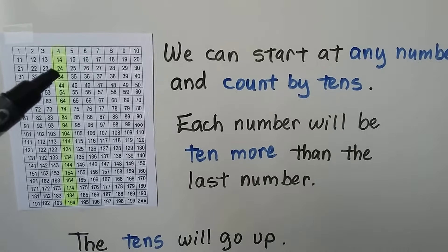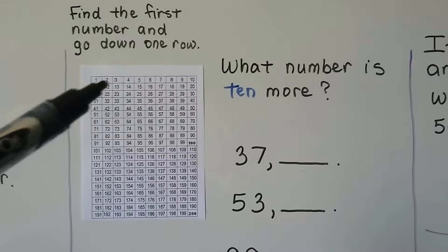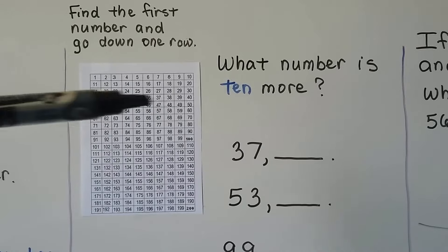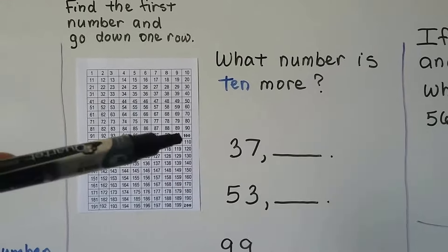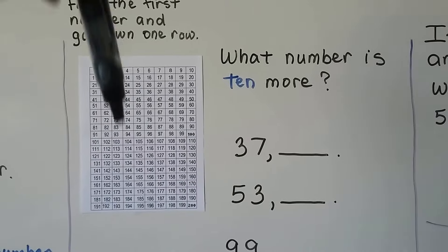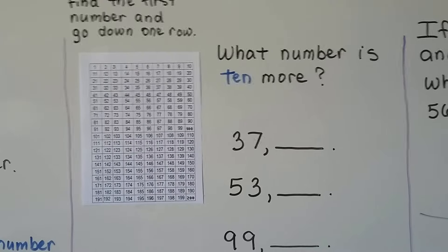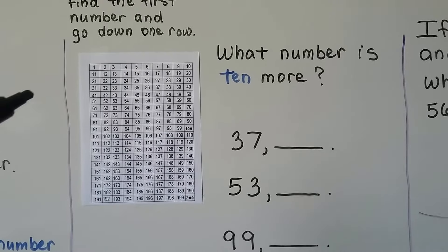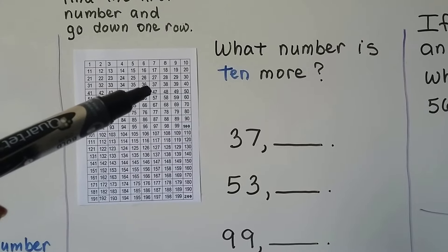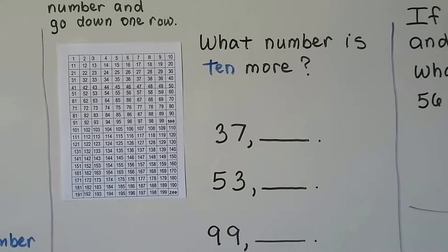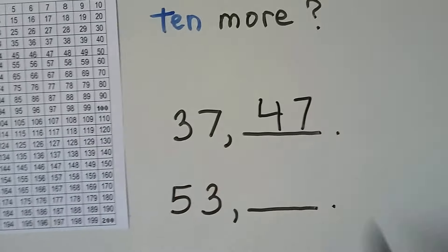We can use a chart to help us. We find the first number on the chart and then go down one row. All the numbers going sideways are in rows, and the numbers coming down are in columns. So what is 10 more than 37? We look for 37 on the chart — here's the 30s. There's 37; we go down one, and it's 47. The tens place went up to a four, and the ones place stayed the same.